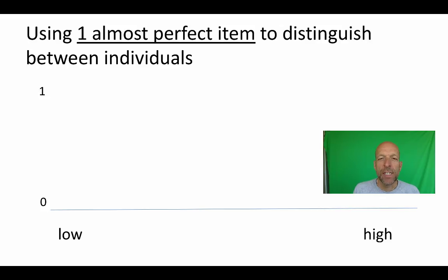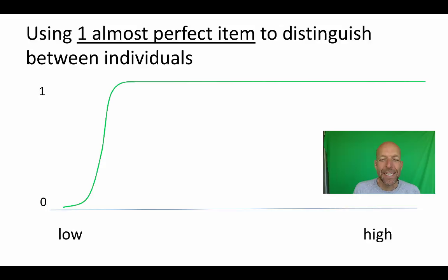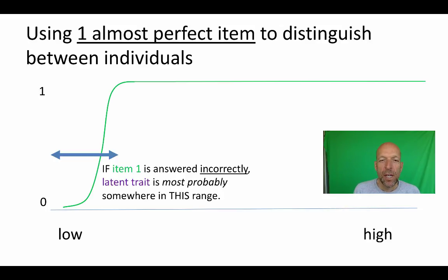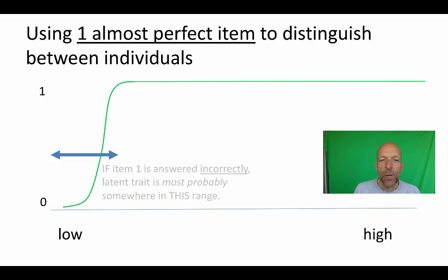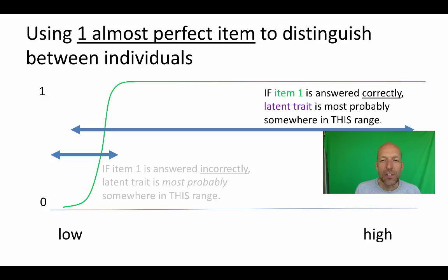Suppose that the item trace line looks like this. We can distinguish between individuals using this specific item. If item one is answered incorrectly by a specific individual, then the latent trait is most probably somewhere in this range. Note that we're dealing with almost perfect items, so the possibility that the person actually has a much higher latent trait is almost absent. If the question is answered correctly, the latent trait is most probably somewhere in this range.